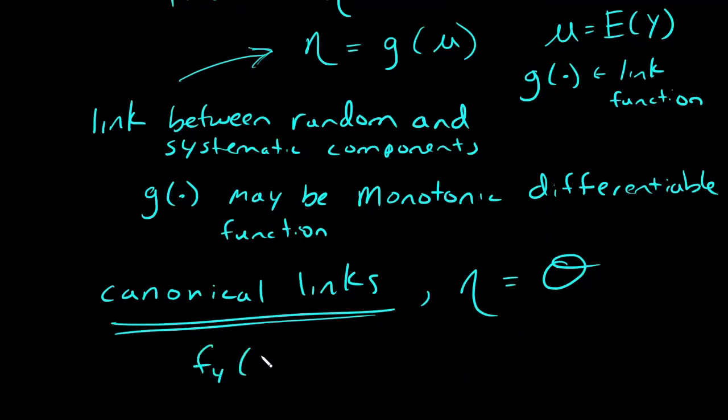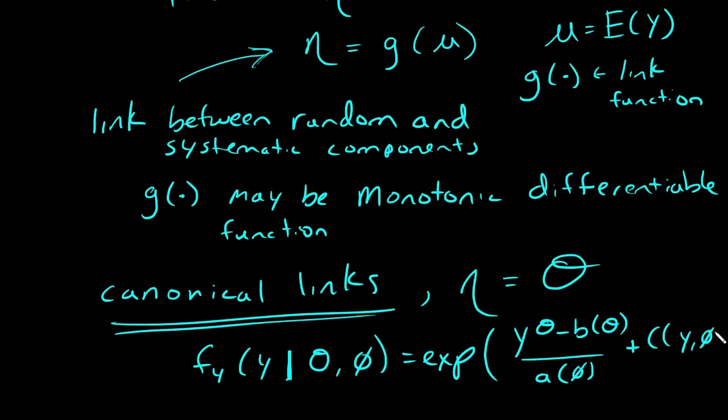In the exponential family distribution, we have f of y given theta and phi, and this equals e to the power of y theta minus b of theta divided by a of phi plus c of y phi. This is the format for exponential family distribution. So whatever you choose for theta, if you let that be your link function, that's the canonical link. Sometimes that parameter theta is called the canonical parameter as well.